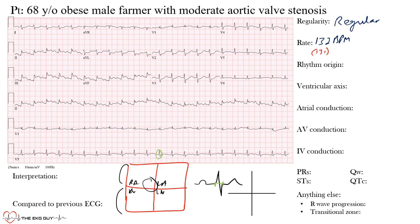Looking at the QRS complexes, they're smaller than three small boxes, so they're actually normal — meaning the rhythm is probably originating from above the ventricles with no intraventricular conduction delay. Next I ask: is it coming from the AV node? I look for P waves preceding QRS complexes. Here P waves are all coming at the same constant interval before each QRS complex, so the rhythm is not from the AV junction.